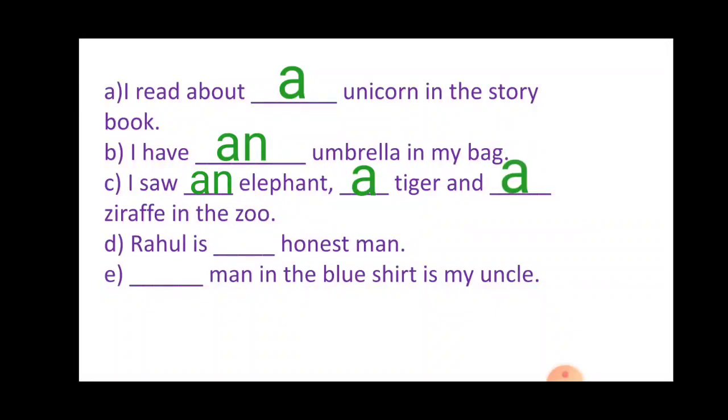D number: Rahul is dash honest man. Honest. Pronunciation is like honest, O means vowel. That's why an will be used. A-N.